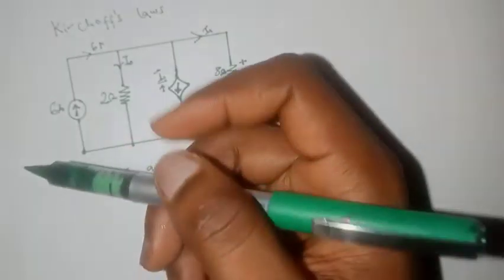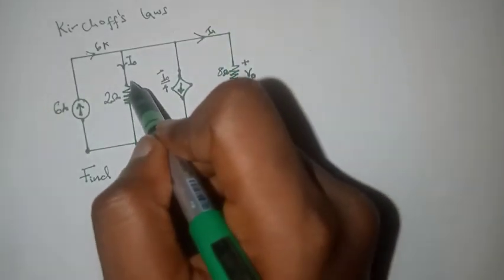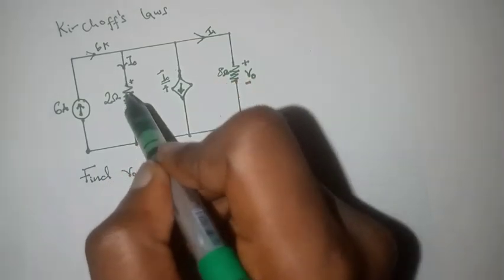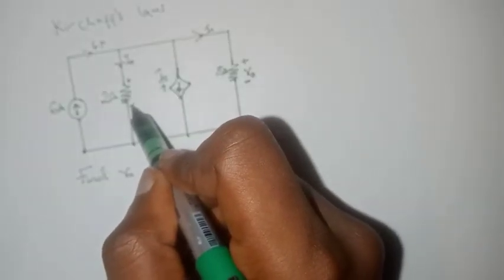Then, we're going to assign polarities to those branches that have no polarities, to those resistors that have no polarities. Let's call this positive and negative.